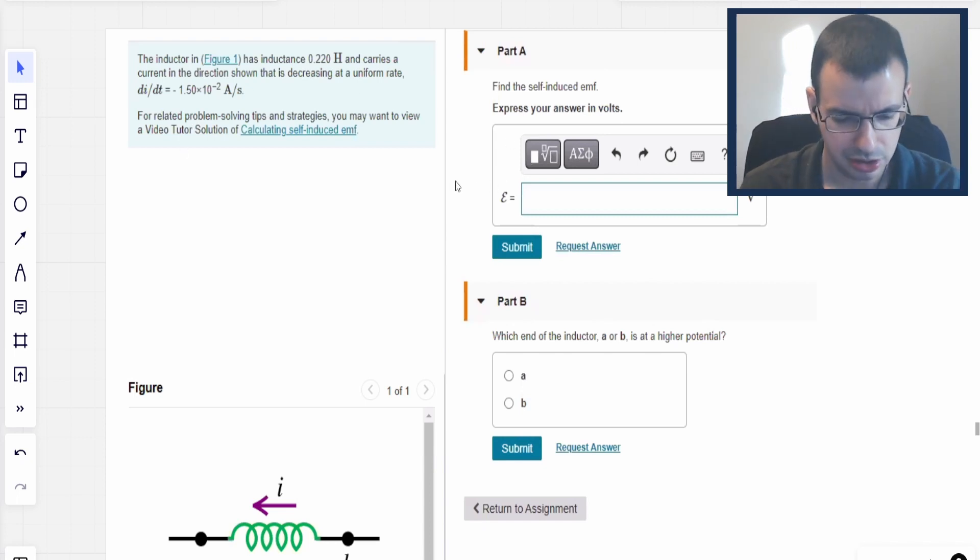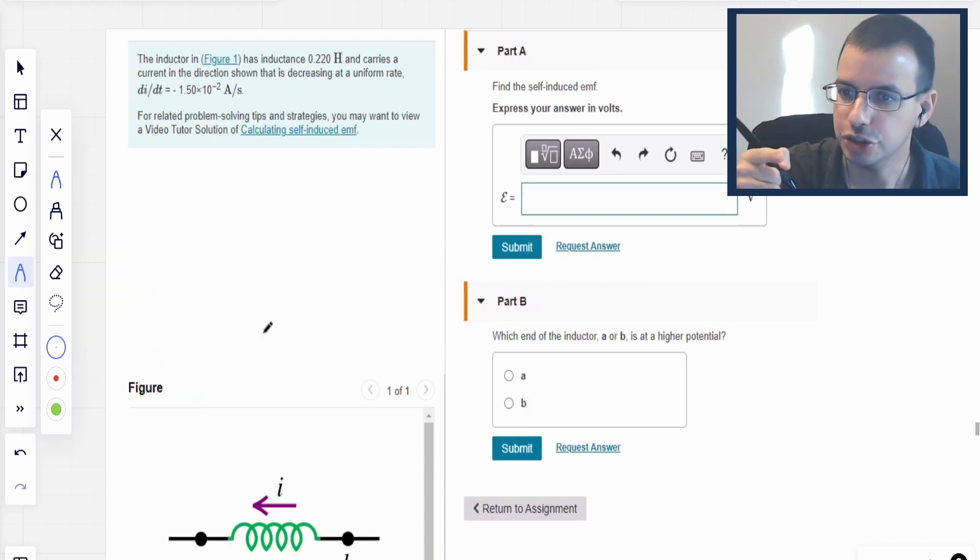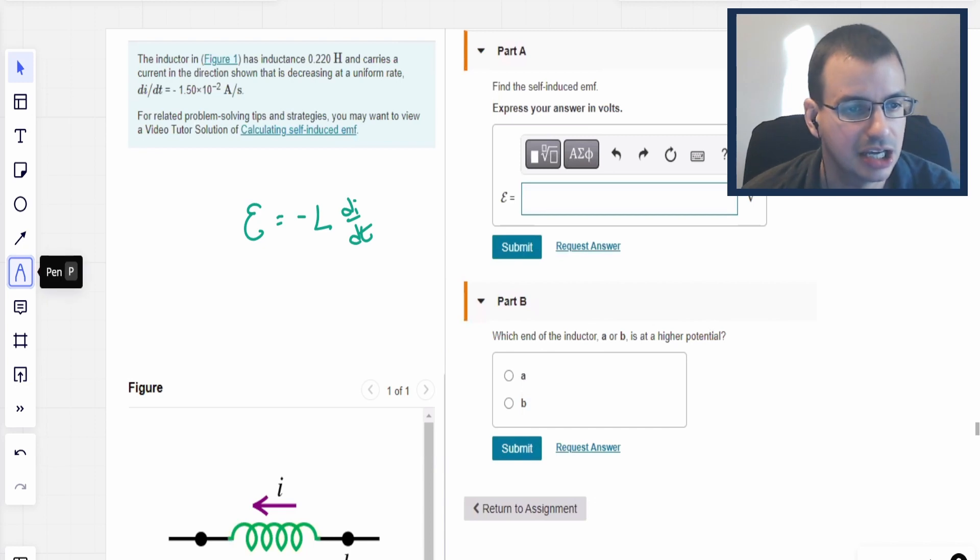Find the self-induced emf. For this I usually start by drawing a picture, picture's drawn. Then I'm going to do formulas, whatever is basically relevant, whatever intuitively comes to mind, which in this case is going to be emf equals negative L di/dt where we know that di/dt is constant.